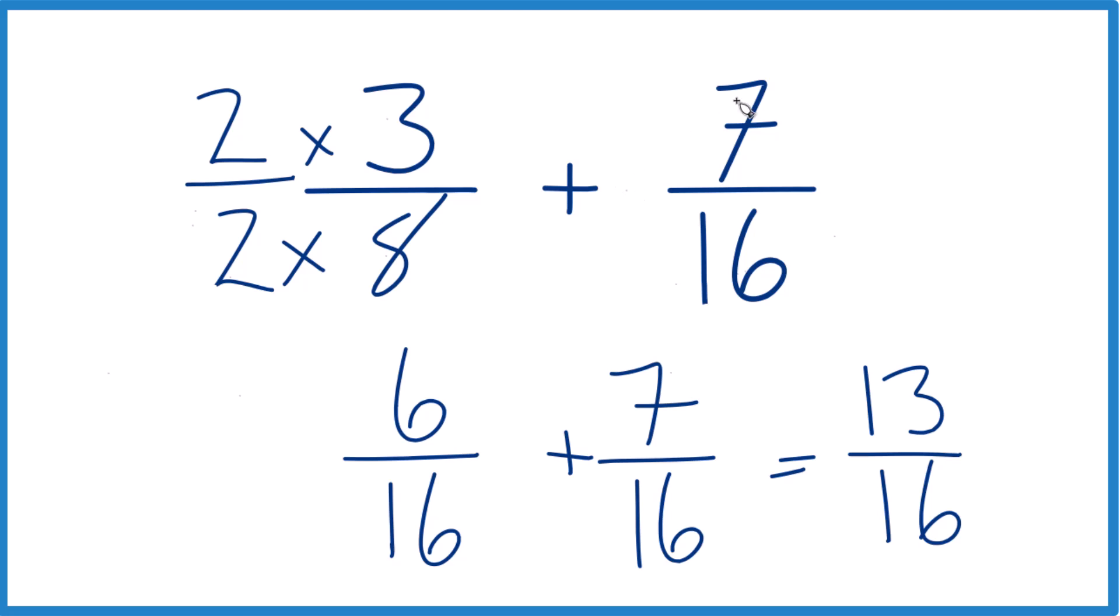So in answer to our question, three eighths plus seven sixteenths, that's 13 sixteenths.